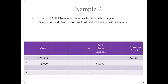The company then signs a note at the bank and borrows $8,000 that must be repaid in six months. The company receives cash and incurs a liability called short-term notes payable. The amounts are written in these columns.